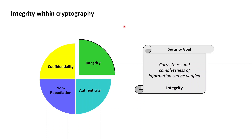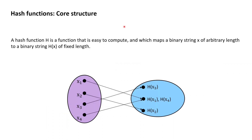The primary primitive with which cryptography can serve integrity-related purposes are cryptographic hash functions. Taking a quick step back, a hash function is, as the name indicates, a function mapping elements of a certain input domain to elements of a certain output domain of hash values.